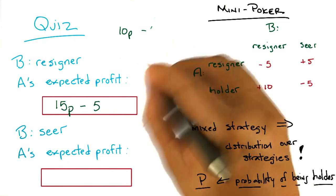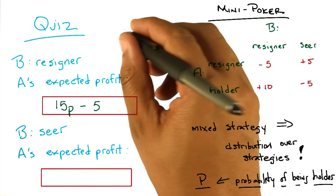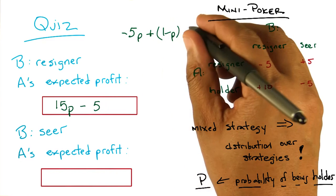Okay, what about B? So the same story except on the seer side. So, yeah, I might need that space again. So 5, so, oh, I see. Right. Minus 5 times P. Plus 5 times 1 minus P.